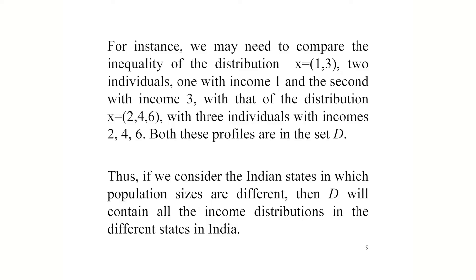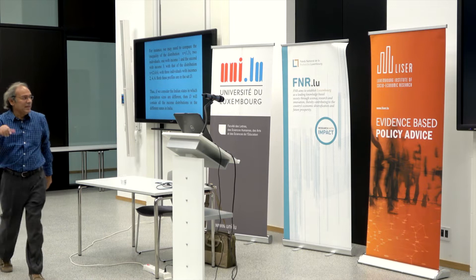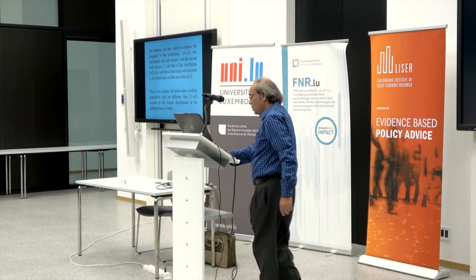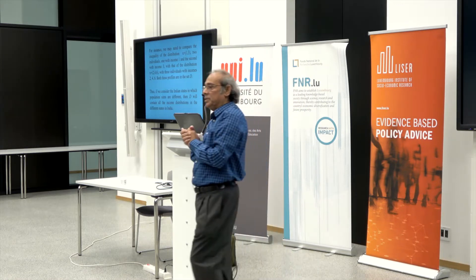For instance, we may need to compare the inequality of the distribution x = (1, 3) — first person's income is 1, second person's income is 3 — with the distribution (2, 4, 6), which has 3 individuals. Both these income distributions are in the set D. We assume that income distributions are non-decreasingly ordered: smallest income first, going up to the largest income. We denote the mean of the distribution by lambda.